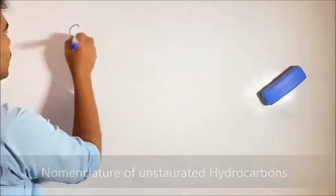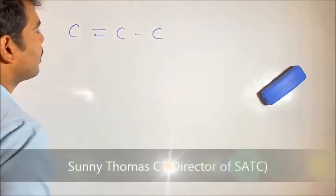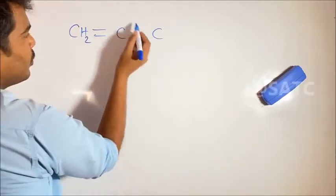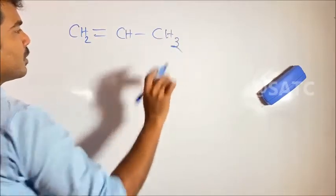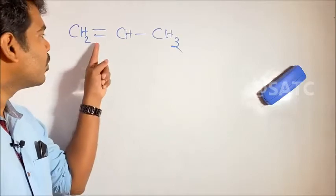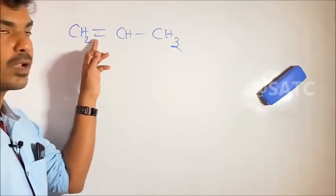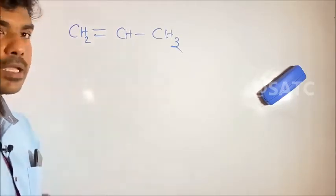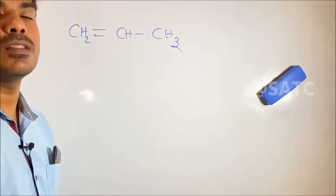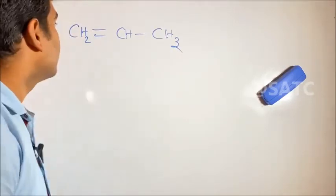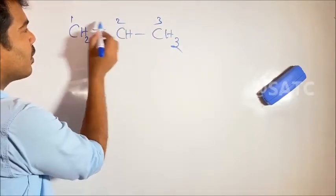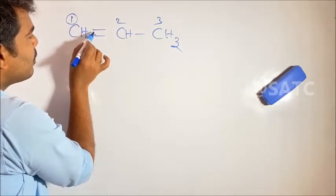For example, we have C double bond C single bond C, with 1 hydrogen and 1 hydrogen, and 3 hydrogens and 3 hydrogens. How do we name these? We look at the number of carbons. You can see the number of carbons is 1, 2, 3. We can see that the number of double bonds is 1.